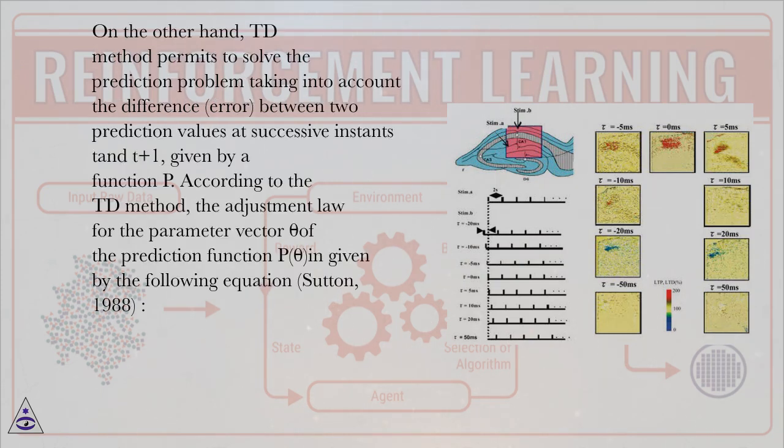On the other hand, TD method permits to solve the prediction problem taking into account the difference (error) between two prediction values at successive instance time t+1, given by a function P. According to the TD method, the adjustment law for the parameter vector θ of the prediction function P(θ) is given by the following equation, Sutton, 1988.